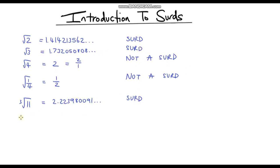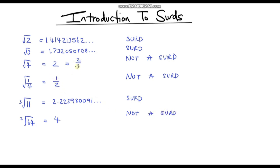Let's pick another one — the cube root of 64. You might think this is a surd, but actually we can evaluate it. The cube root of 64 is 4, because 4 times 4 times 4 is 64. So this is not a surd. We could write this as a fraction — 4 over 1.